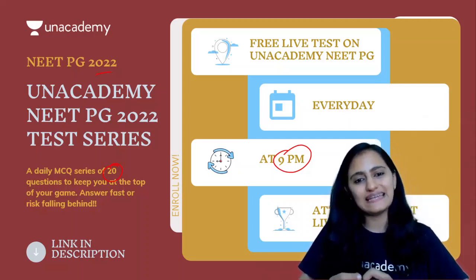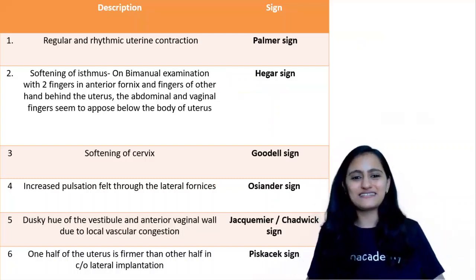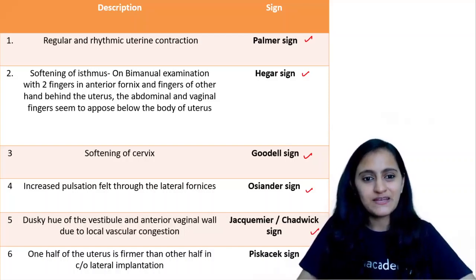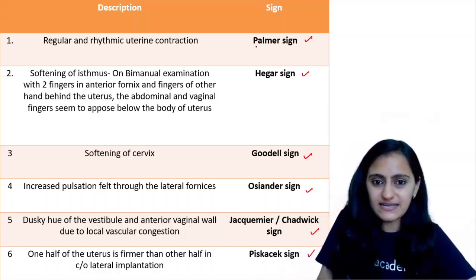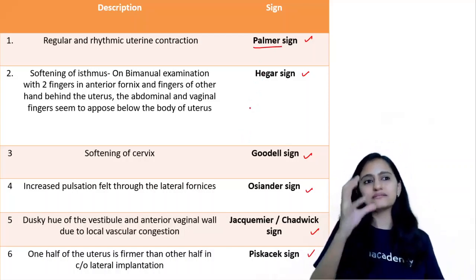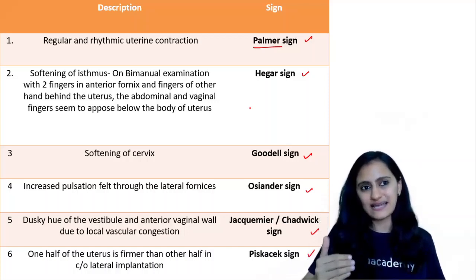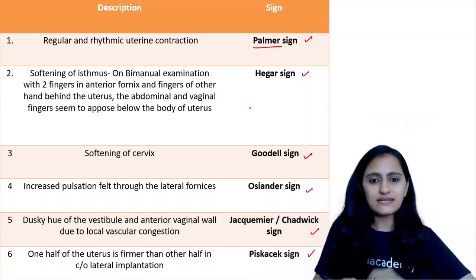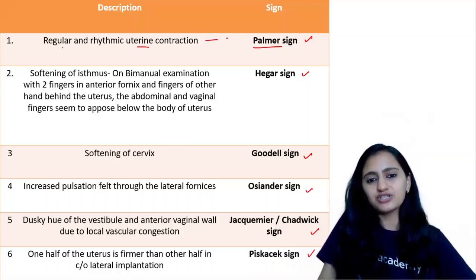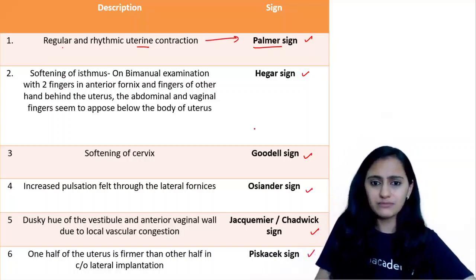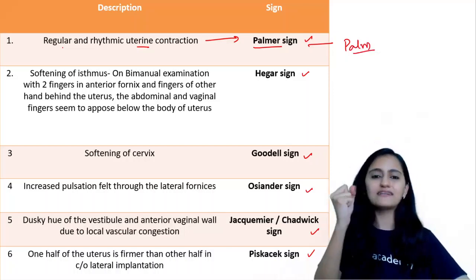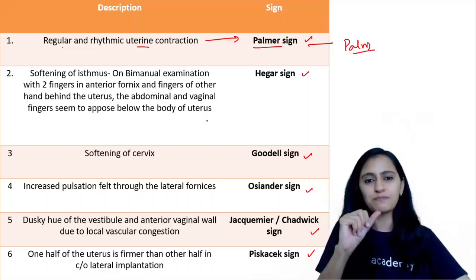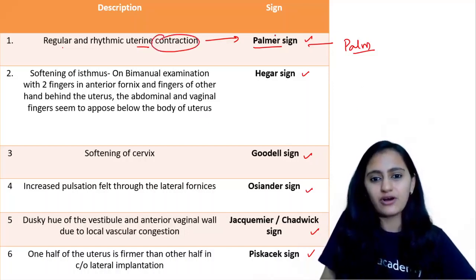Let's start. These are six important frequently-asked signs. How do we remember them? The first sign is Palmer sign. In questions, they may give you a description and ask which sign it describes. Palmer sign is the regular and rhythmic uterine contraction. To remember it: think of the palm of your hand doing palm exercises — contracting, relaxing, contracting, relaxing. So the palm contracts and relaxes — Palmer sign is related to uterine contraction. Remember: palm = contraction.